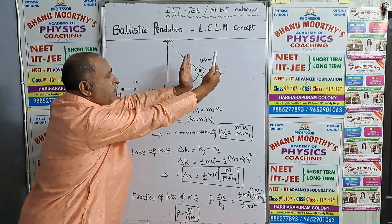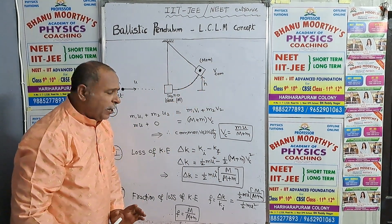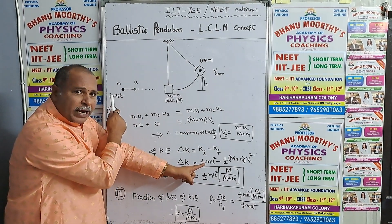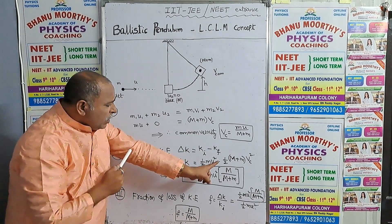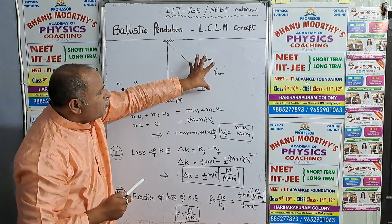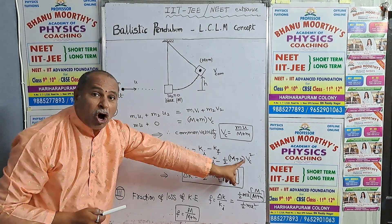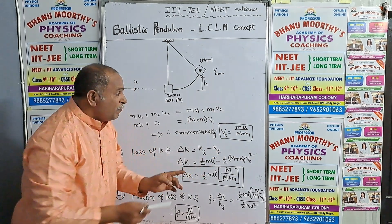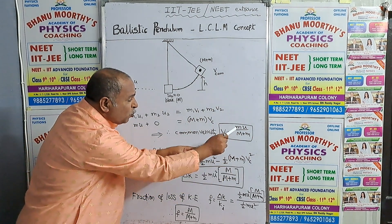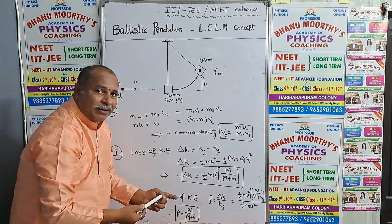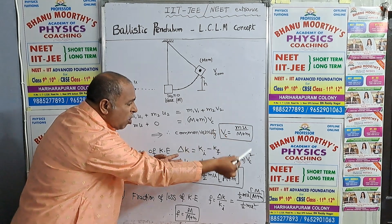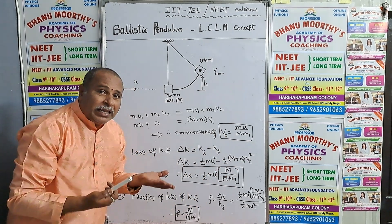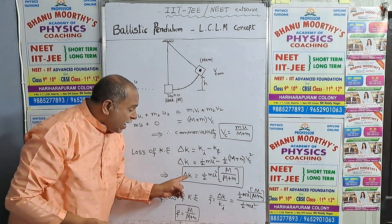K initial minus K final — this is K initial, this is K final. Now, the initial kinetic energy for the bullet is half·m·U², minus after collision the kinetic energy of the combination, which is half·(M + m)·V_common². We substitute the V_common value here, and after substituting V_common in this formula, we get the final equation for loss of kinetic energy.